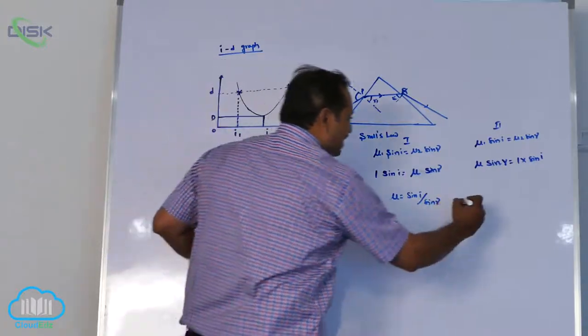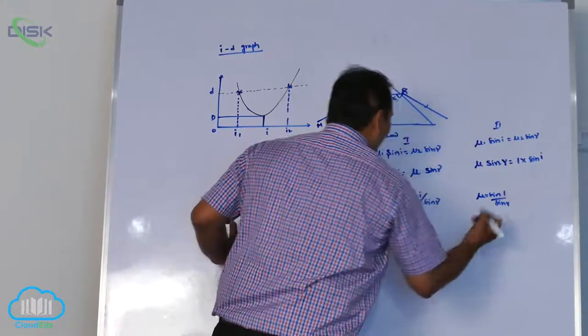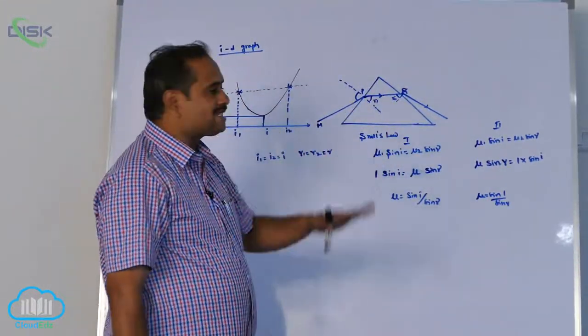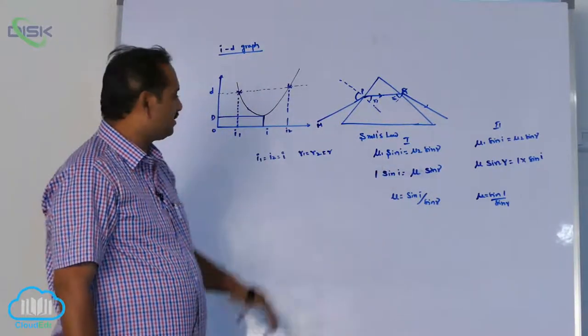So once again, what I am getting: mu equal to sin i by sin r. What is the conclusion? Either you can apply first surface or second surface, condition for refractive index is same. That is your choice.